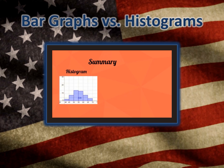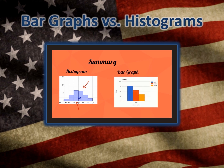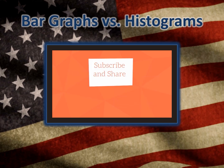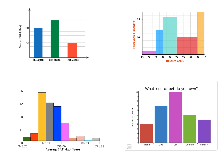In summary, histograms have bars that touch and use quantities. Bar graphs have bars that don't touch and use categorical data. Look at each graph and decide what type of data is being graphed. If it's categorical data, it is a bar graph. If it is numerical data, then it is a histogram.